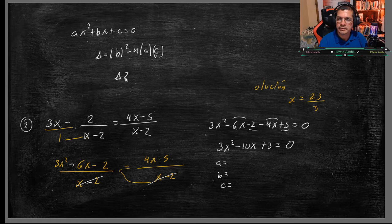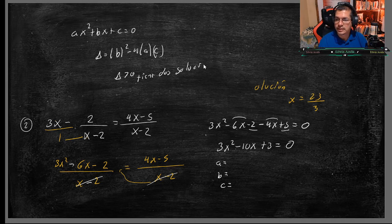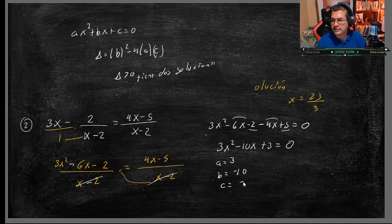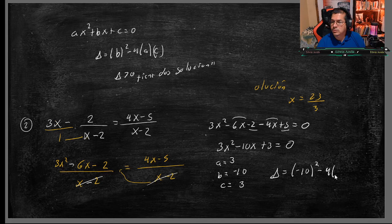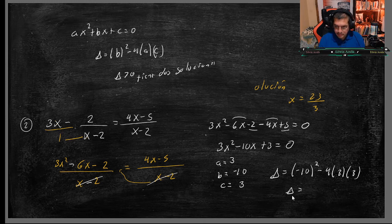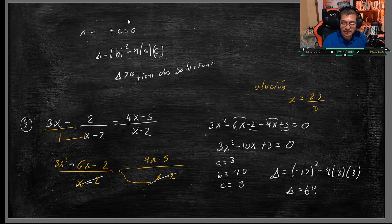Si el discriminante es mayor que 0, tiene dos soluciones. Aquí sería A vale 3, porque aquí está acompañando a X2, B vale menos 10 y C vale 3. Sacamos el discriminante. Sería menos 10 a la 2 menos 4 por A por C que es 3. Y esto me quedaría 100 menos 4 por 3 por 3 y el resultado es 64. Profesor, tiene dos soluciones. Eso es lo que indica la función.